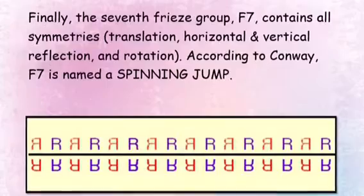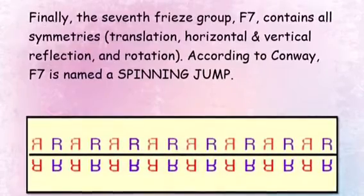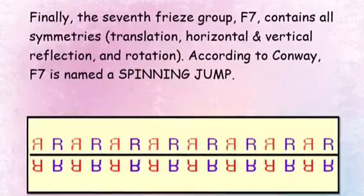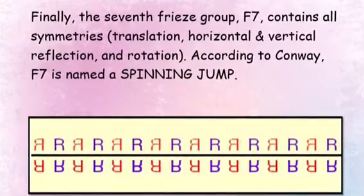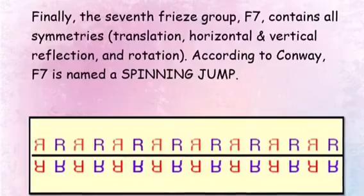Finally, the seventh freeze group, F7, contains all symmetries: translation, horizontal and vertical reflection, and rotation. According to Conway, F7 is named a spinning jump.